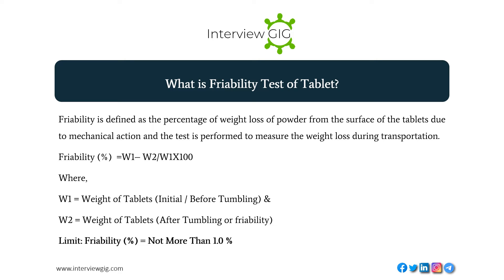What is the friability test of a tablet? Friability is defined as the percentage of weight loss of powder from the surface of the tablets due to mechanical action, and the test is performed to measure the weight loss during transportation. Friability % = (W1 − W2) / W1 × 100, where W1 is the weight of tablets before tumbling and W2 is the weight of tablets after tumbling. The limit for friability is not more than 1.0%.